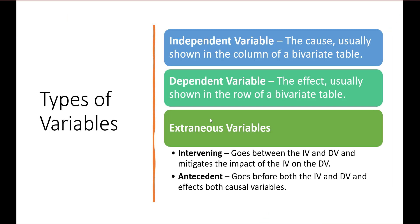Let's review a little about variables. The independent variable is the cause and is usually shown in the column. The dependent variable is the effect and is usually shown in the row of a bivariate table. In addition, we have extraneous variables — variables that influence the independent and/or dependent variable and impact their relationship. Intervening variables go between the independent and dependent variable and mitigate the impact of the independent on the dependent variable. Antecedent variables go before both the independent and dependent variable and affect both causal variables.